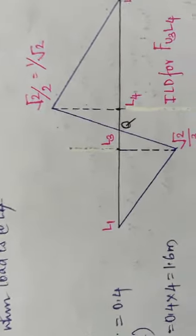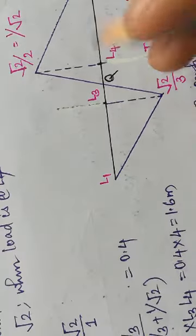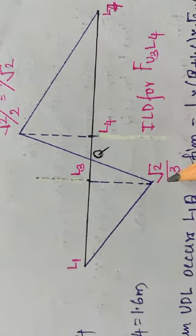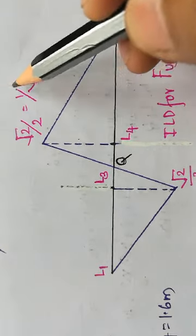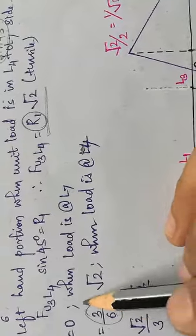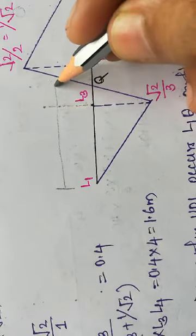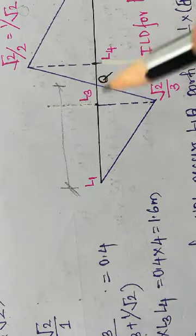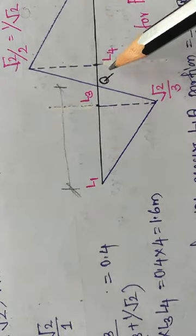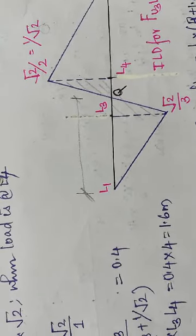Now let us draw the full ILD. The base runs from L1 to L7. I need to find the position of point Q — the intersection point — to determine the triangle area. Using similar triangles: L3Q / QL4 = (√2/3) / (1/√2), and L3L4 = L3Q + QL4.